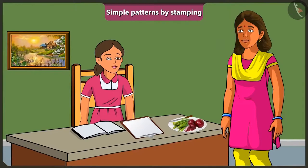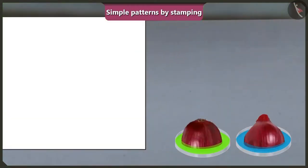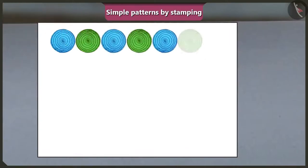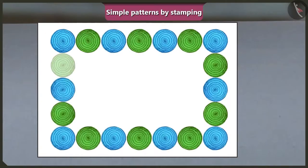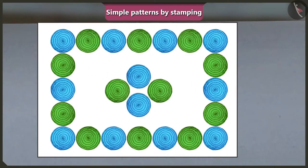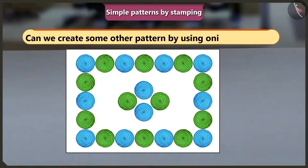Pattern with an onion stamp. How? Dip the two pieces of onion in two different colors and stamp on all four corners of the page like this. See, the pattern is ready. Oh yes, now we can stamp the onion in the middle also. Very good, Vinny. Mummy, can we create some other pattern by using onions as stamps?